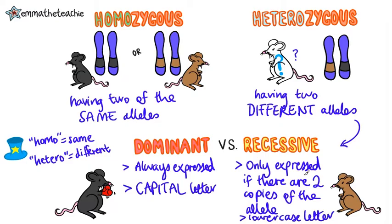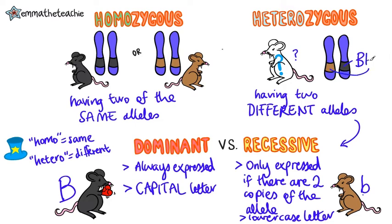You'll be told which allele is dominant and which is recessive, so you don't need to memorize that. In this case, black fur is the dominant allele, so it gets the big B. And brown fur is recessive, so it gets the small b. So looking at the genotype of this mouse: it has the big B for black fur and a little b for brown fur. Note that the capital always goes first.